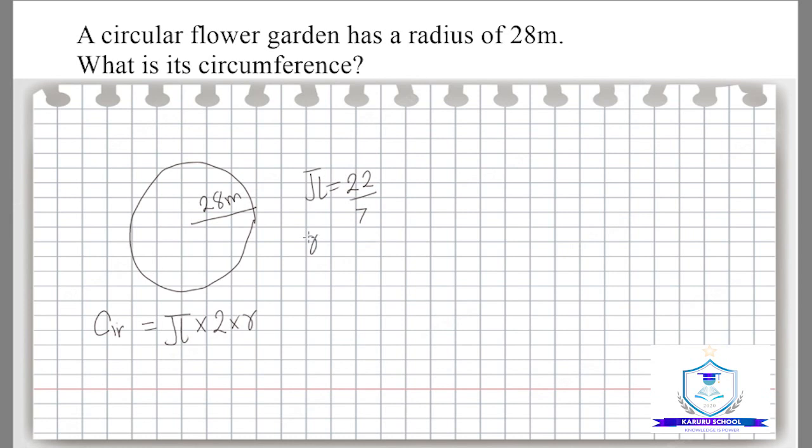So substituting in the values, we have 22 over 7 multiplied by 2, and then multiply by 28 meters. Simplify your expression by crossing out common numbers.